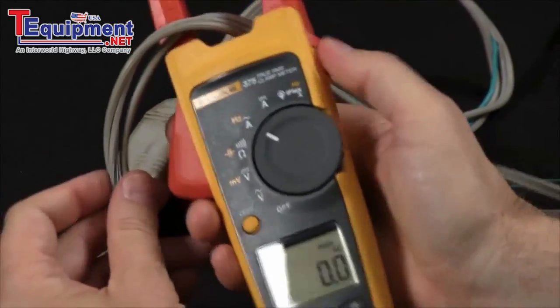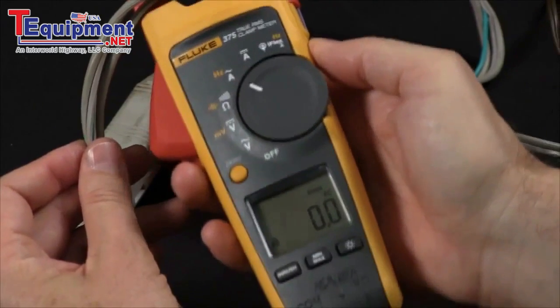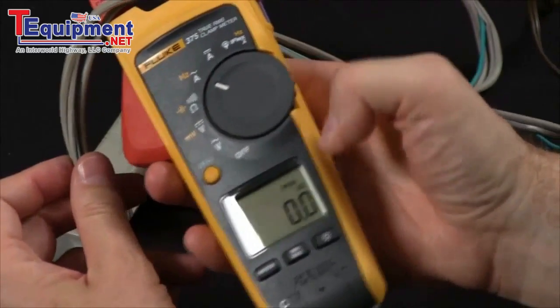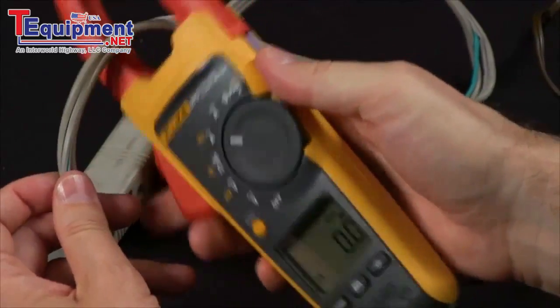A mistake that a lot of people make is trying to measure around the entire cord. You'll see that the flow going through the hot and returning to the neutral is going to cancel out, and we'll see a zero indication on the screen.